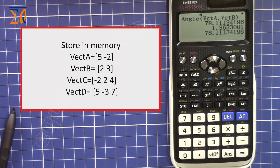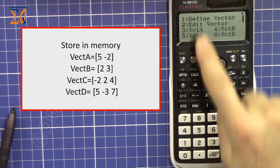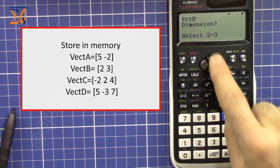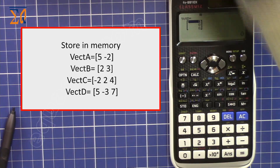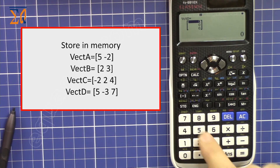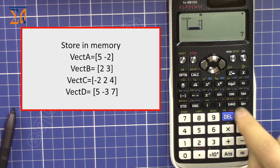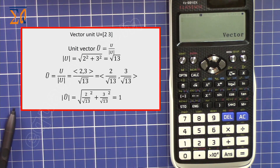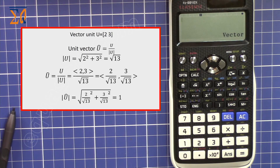Now let's store another vector into memory. We'll enter it into vector D. Press Option, 1 (Define), for vector D press 4. The dimension is 3. The three values are 5, minus 3, and 7. Enter 5 then equal, minus 3 then equal, and 7 — this is now stored.